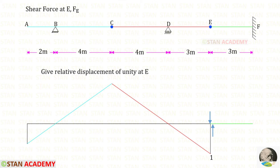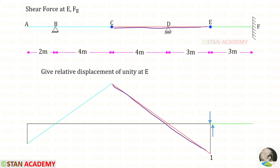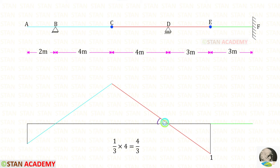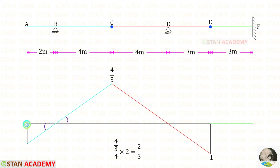Now let us draw the ILD for the shear force at E. In point E, we have to give relative displacement of unity — left side downwards and right side upwards. There will be no change in segment EF because there is no rotation in point EF. The segment EDC will go this way; in point C there is a hinge so it will move upwards and the segment ABC will follow accordingly. Since the displacement occurs on only one side, the displacement will be unity. Using the same-angle concept, we can find the corresponding heights. This is the ILD for the shear force at E.